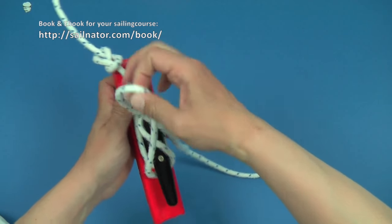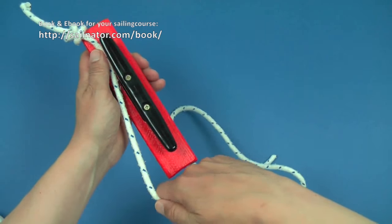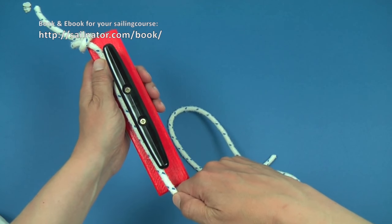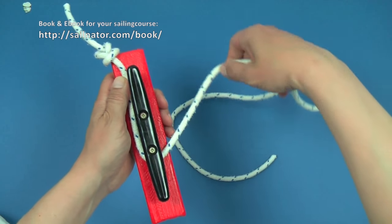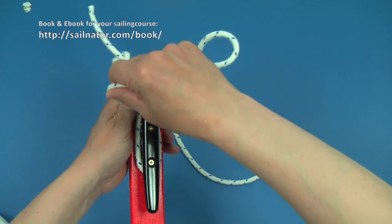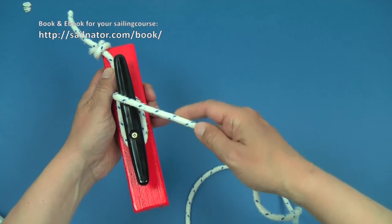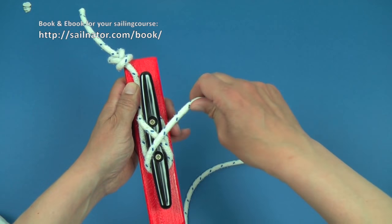I show how to tie the cleat knot once again. I memorize the progress like this. First I lay an O around the base of the cleat, then an X over it, then another X, and then the bitter.